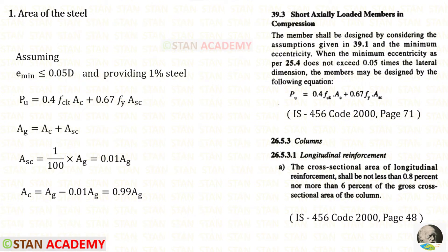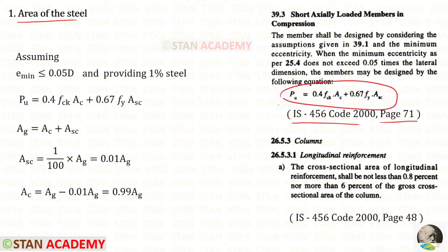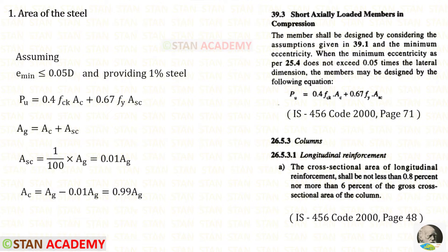Now we are going to find the area of the steel. Let us open the codebook page number 71. To find the area of the steel we can use this formula, but there is a condition: the minimum eccentricity should not exceed 0.05 times the lateral dimension. Let us assume that condition is satisfied. Then opening page number 48, the cross-sectional area of longitudinal reinforcement shall be not less than 0.8% and not more than 6% of the cross-sectional area.